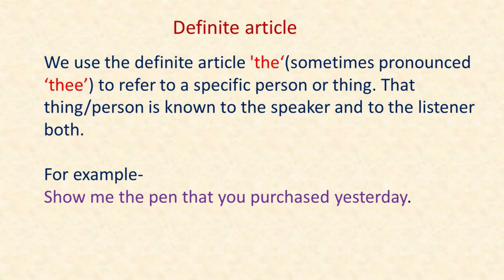We use the definite article 'the' — sometimes pronounced 'thee' — to refer to a specific person or thing. That thing or person is known to both the speaker and to the listener.